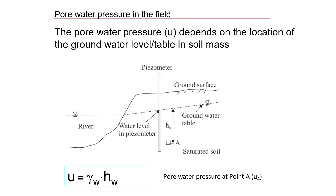To estimate pore water pressure in the field, we need to know the groundwater level, also called the groundwater table. We install a piezometer to determine this level. The soil underneath the groundwater table is typically saturated, and in most geotechnical engineering problems we assume the soil below the groundwater table is fully saturated.